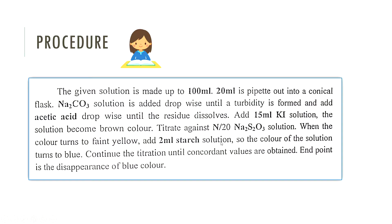This is then titrated against Na2S2O3 solution. When the color turns to faint yellow, add 2 ml starch indicator solution. We will start the titration. Initially we do not add any indicator. The color of the sodium thiosulfate solution causes the starch-iodine complex to turn blue, and the end point is the disappearance of the blue color.